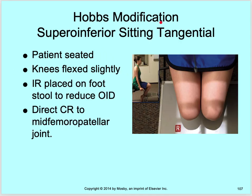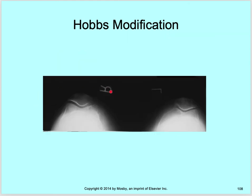The Hobbs modification is superior-inferior with the patient sitting, the cassette underneath them. The IR is placed on a footstool to reduce OID — raised up as much as possible, not on the floor. Direct the central ray to the mid femoral-patellar joint, imaging both knees. You can see the open joint space really well. The collimated field includes both knees, all soft tissue, and both right and left markers.